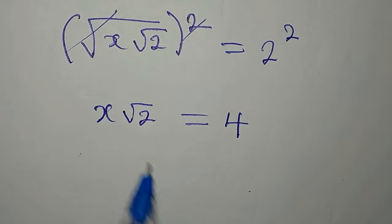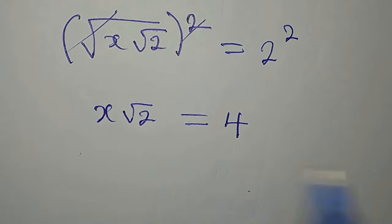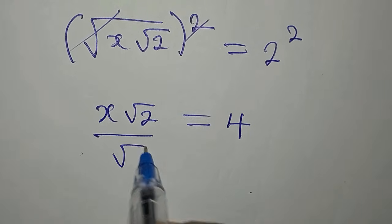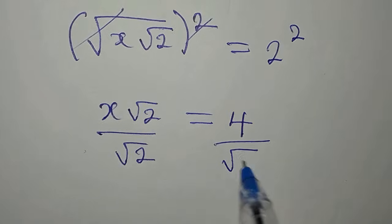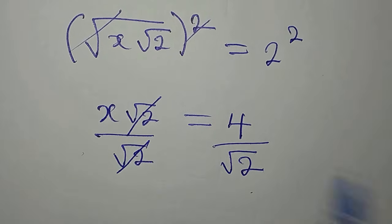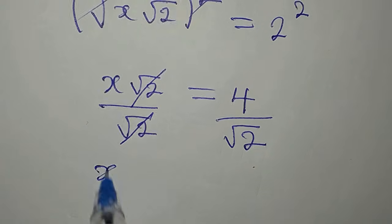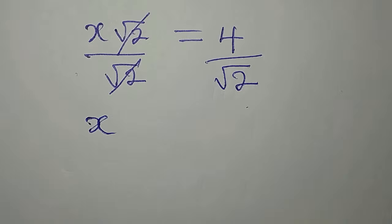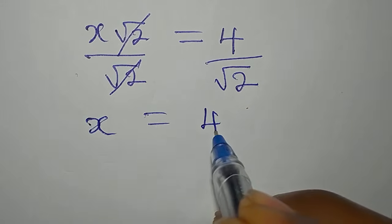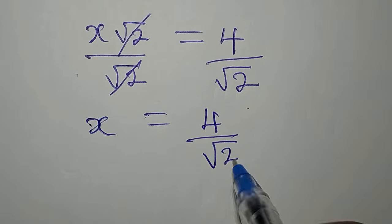Now, we still have a square root here, but we can decide to divide this by root 2 and divide this by root 2. This and this will go. Now, our x is equal to 4 over root 2.